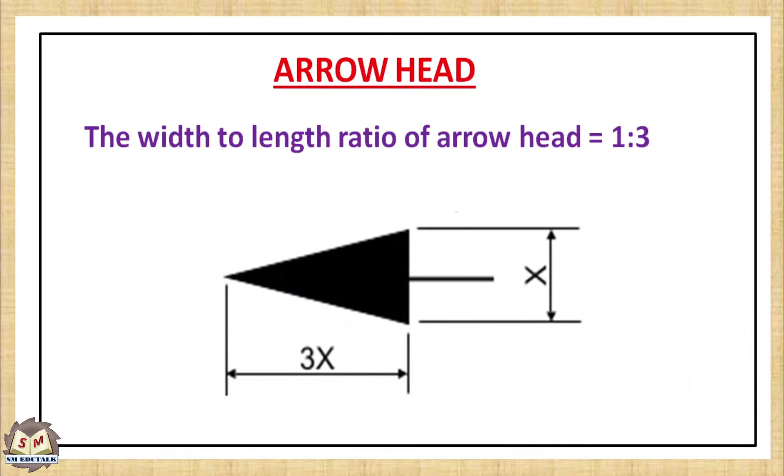Among the five, the most popular and widely used one is closed and filled arrow head. There is a BIS standard to draw the arrow head. Its width to length ratio is 1 is to 3. If its width is taken as x, then its length is 3x. It should be an isosceles triangle. Some students have been drawing the arrow head like an equilateral triangle. Never draw this shape.